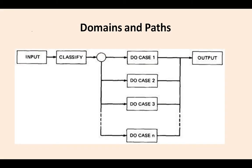Now, domains and paths. Here the input is clearly specified. We can classify that particular input according to some set of cases and then output will be generated. By default, all cases are connected — case 1, case 2, up to case n. All paths finally lead directly to the output. All the data can be classified by the set of cases up to n and all the cases lead to the output.